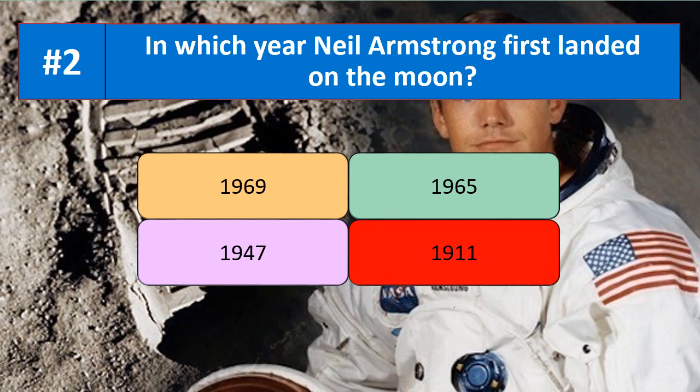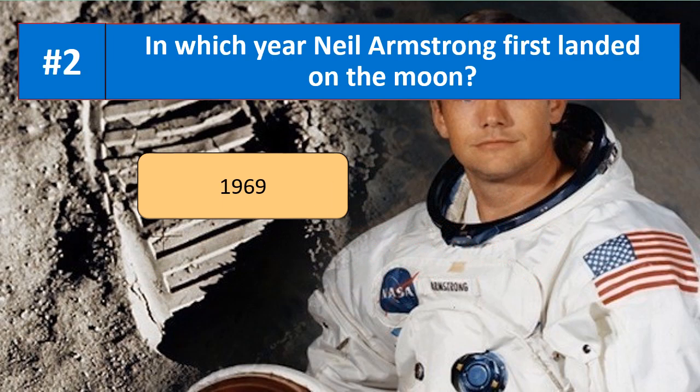Question number two: in which year did Neil Armstrong first land on the moon? Your options are 1969, 1965, 1947, or 1911. The correct answer is 1969 — Neil Armstrong first landed on the moon in 1969.